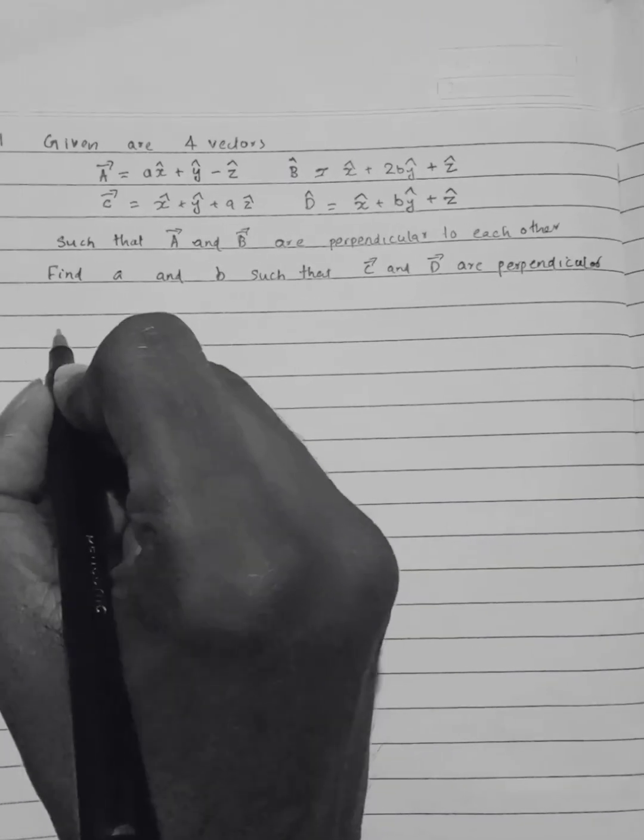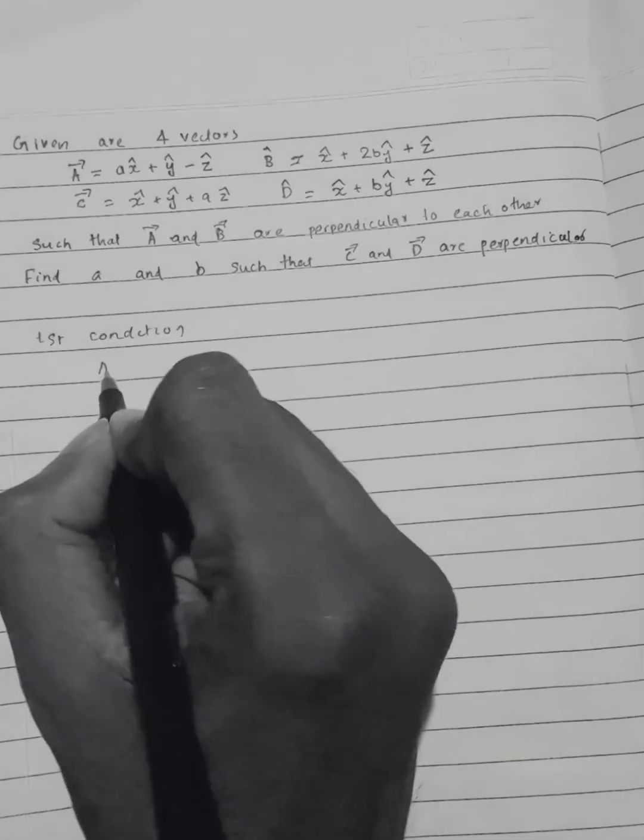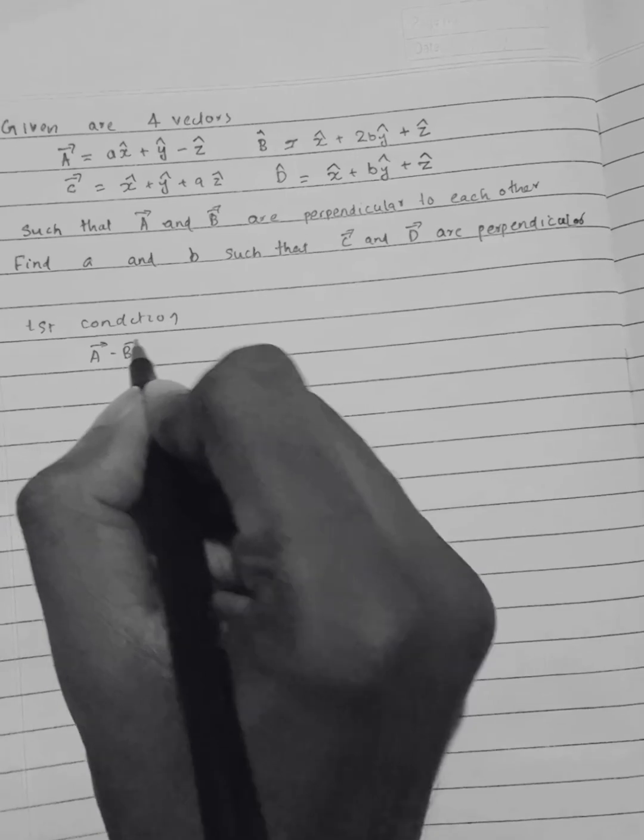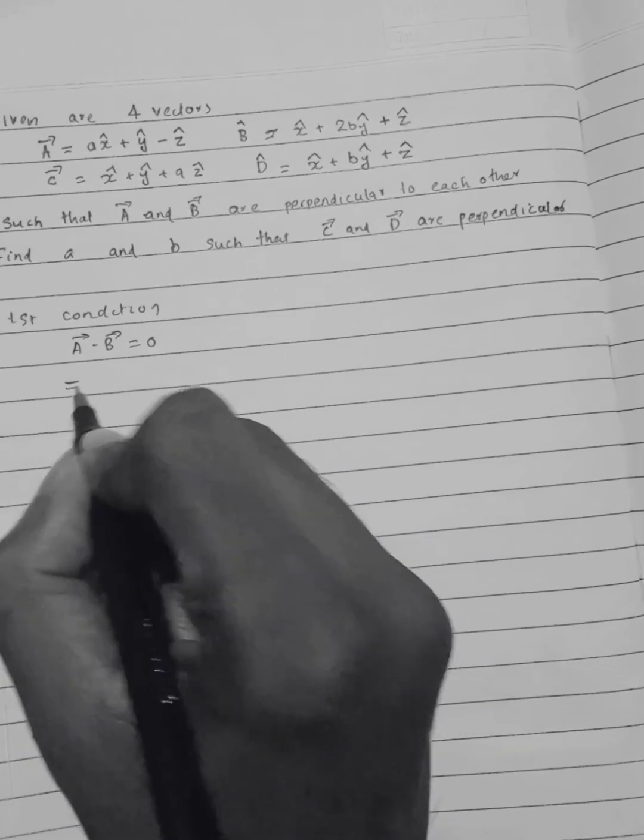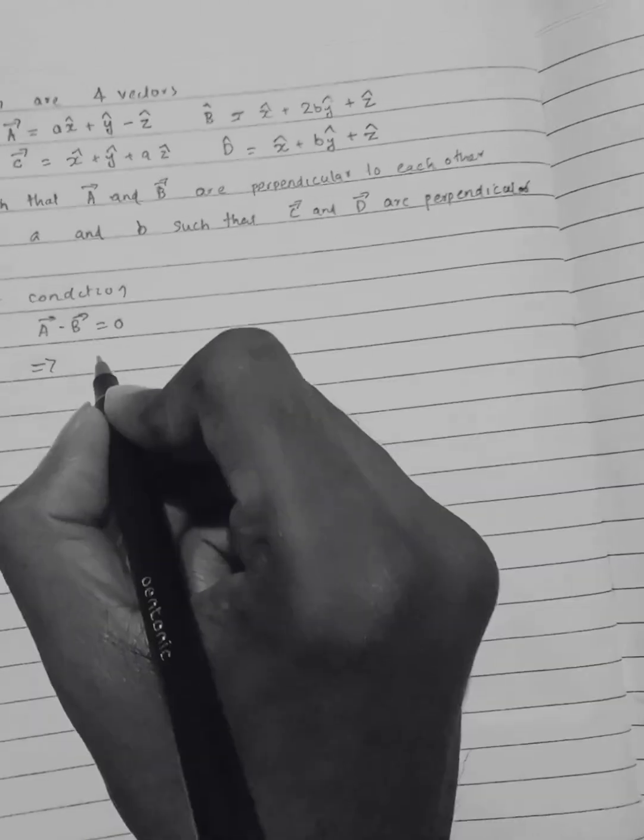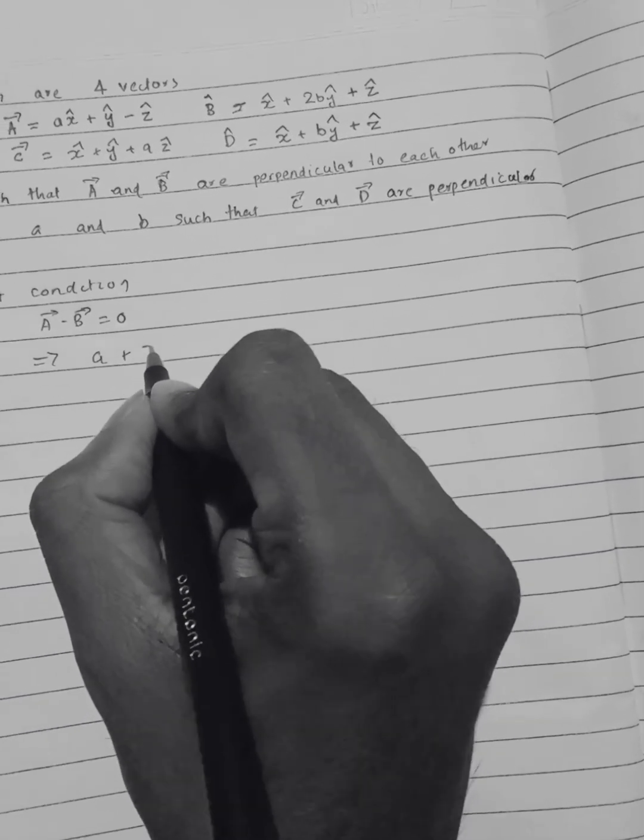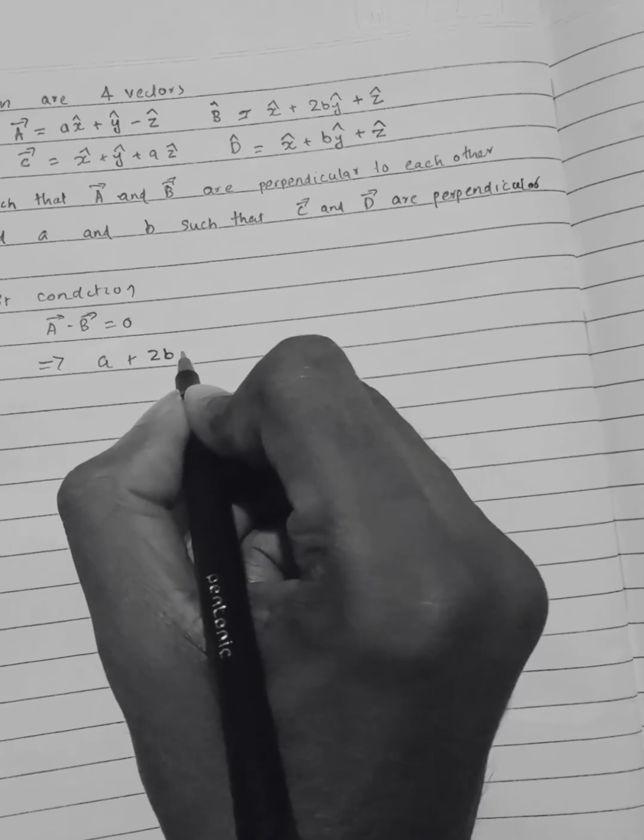Therefore, the first condition would be A dot B equals zero, which implies a plus 2b minus 1 equals zero.